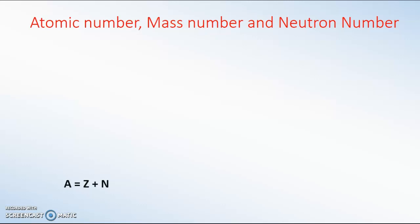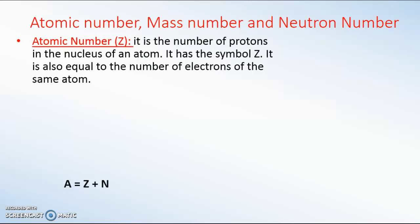Now let's look at three numbers used to describe the particles in the atom. The first is the atomic number, represented by the letter Z. It is the number of protons in the nucleus of an atom. The atomic number Z is also equal to the number of electrons in that atom. On the chemical symbol of an element, the atomic number is displayed at the subscript.